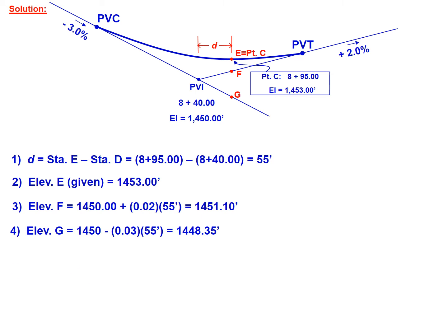We'll use those parameters now to solve for S. So square root of 1453 minus 1448.35 divided by 1453 minus 1451.1. Simplifying that, we get the square root of 4.65 divided by 1.9, which gives us an S of 1.5644.